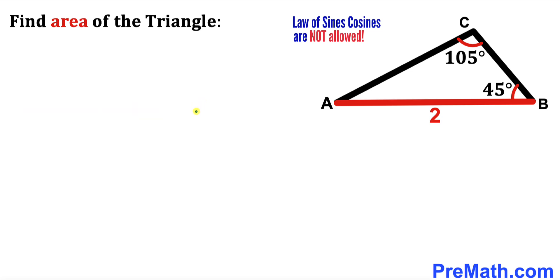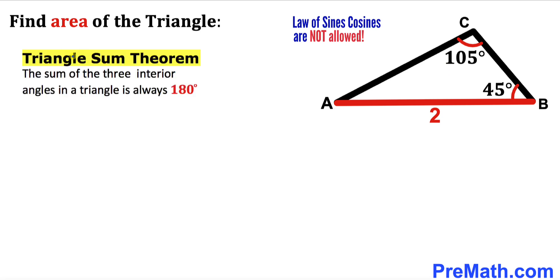Let's get started. We are not going to use the law of sines and cosines to calculate the area. Let's recall the triangle sum theorem: the sum of three interior angles in a triangle is always equal to 180 degrees. Since we know one angle is 45 degrees and another is 105 degrees, the third angle must be 30 degrees.